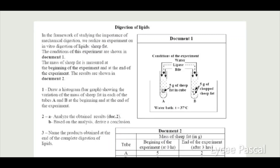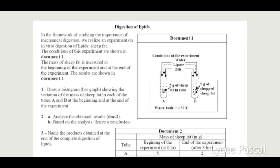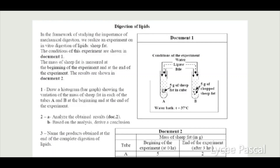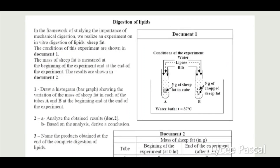Now let's look at an example about the digestion of lipids. We have two test tubes, both containing the same substrate — five grams of sheep fat. In the first tube, the sheep fat is in cube form, while in the second tube, the sheep fat is chopped. We add water, lipase, and bile to both tubes, then place them in a water bath at 37 degrees Celsius.